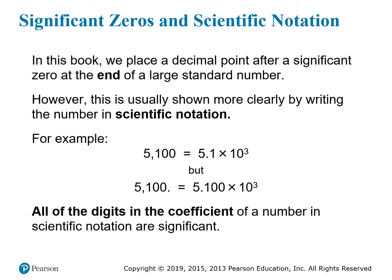Sometimes you need to indicate that a zero which looks insignificant actually is significant. In cases like this, you can put a decimal in the number, but it's usually better to write the number in scientific notation. For example, 5100 without a decimal place has only two significant figures — the five and the one. But with the decimal place, all four digits are significant. It's hard to tell them apart in standard notation, but writing them in scientific notation makes it much clearer, because you know that the entire coefficient is significant.